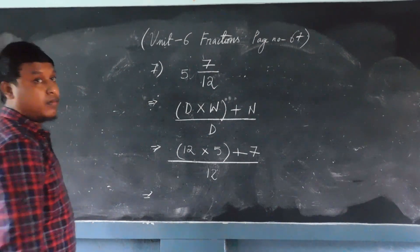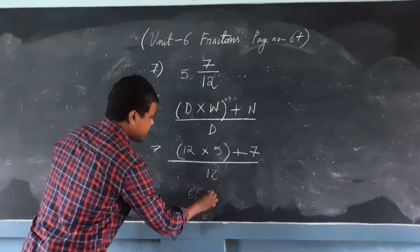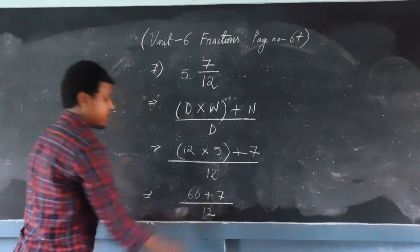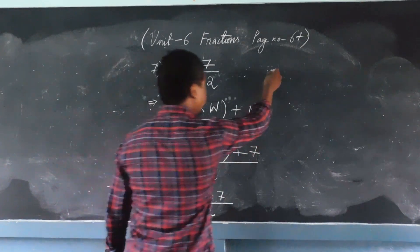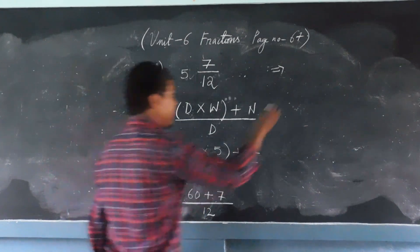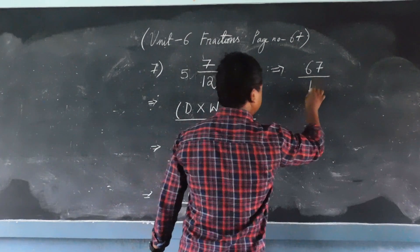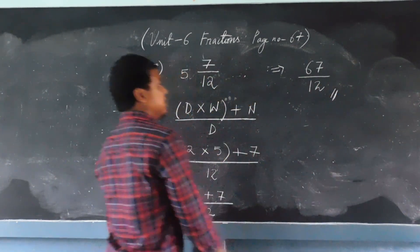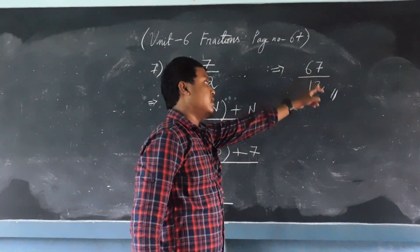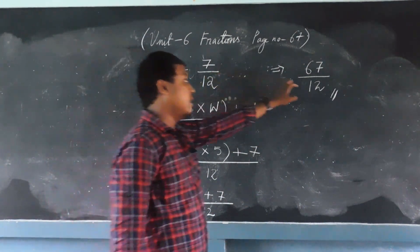We know the table of 12: 12 times 5 is 60. This plus comes down, and 7 comes down, with 12 staying in the denominator. Next step: 60 plus 7 is 67. So we get 67/12. This is an improper fraction because the numerator is greater than the denominator. We have successfully converted a mixed number into an improper fraction.